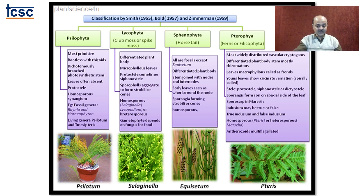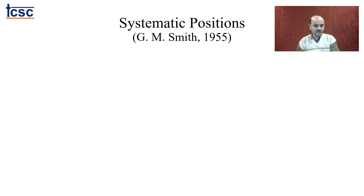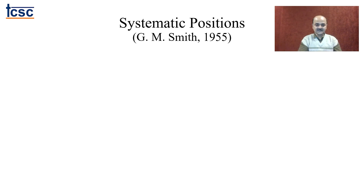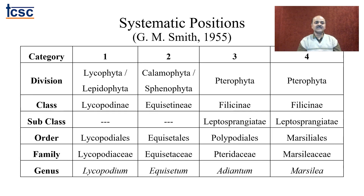Moving to the orders: Lycopodium is Lycopodiales, Equisetum is Equisetales, Adiantum is Polypodiales and Marsilia is Marsileales. Families are Lycopodiaceae, Equisetaceae, Pteridaceae and Marsileaceae respectively. These are the comparative studies of various genera. Nephrolepis is not included here because it is a cultivated plant, while we are talking about naturally occurring wild species for which G.M. Smith gave consideration.